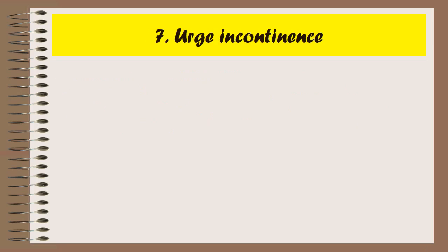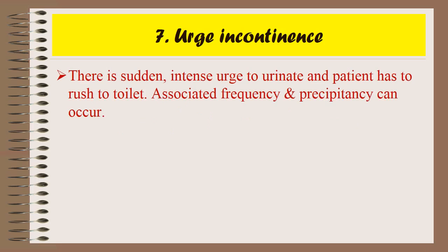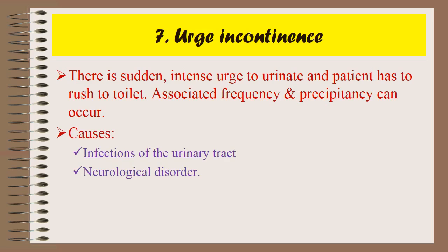The next type of urinary incontinence is urge incontinence. In this type, there is a sudden, intense urge to urinate and the patient has to rush to the toilet. Associated frequency and precipitancy can occur. The causes include infections of the urinary tract and neurological disorders.